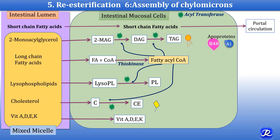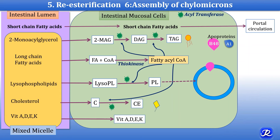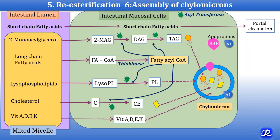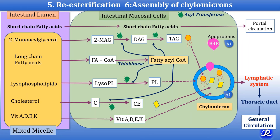Two apoproteins, ApoB48 and ApoA1, are synthesized in the intestinal mucosal cells, and all the lipid components are assembled into the chylomicron. The chylomicron is the lipoprotein which carries dietary (exogenous) lipids from the intestine to the liver. Phospholipid forms the outer membrane of the chylomicron. ApoB48 and ApoA1 are incorporated into it, and triacylglycerol, cholesterol esters, and vitamins A, D, E, K form the core. The chylomicron is secreted through the lymphatic system and then through the thoracic duct enters general circulation and reaches the liver.